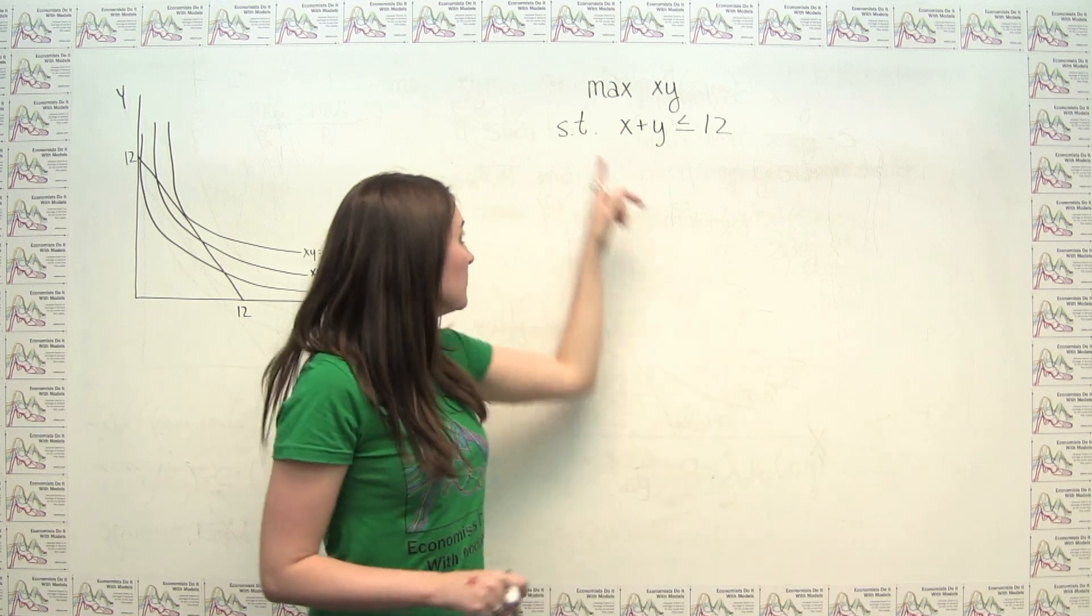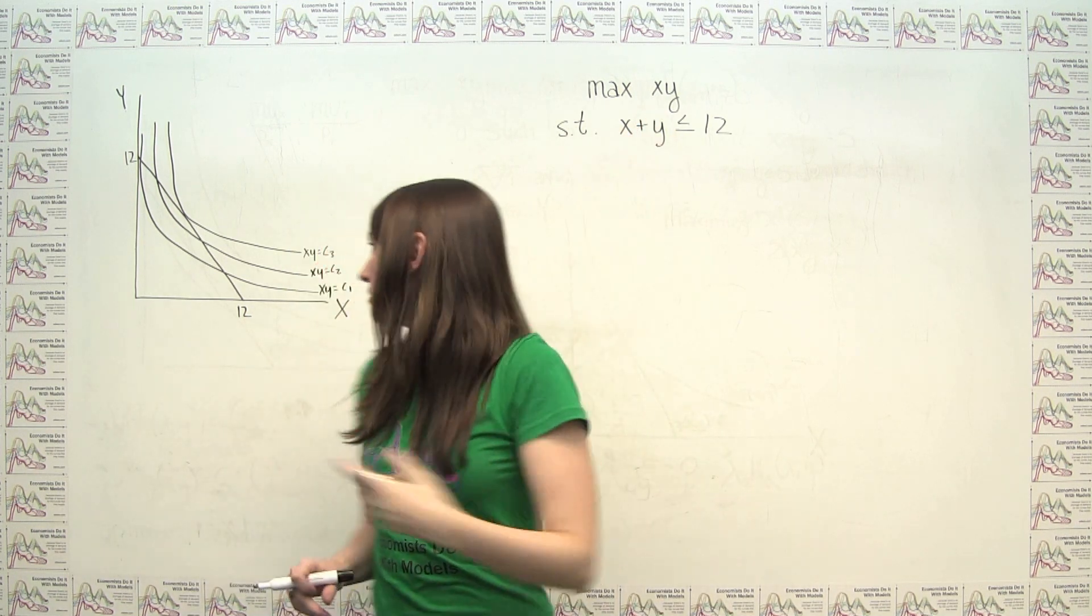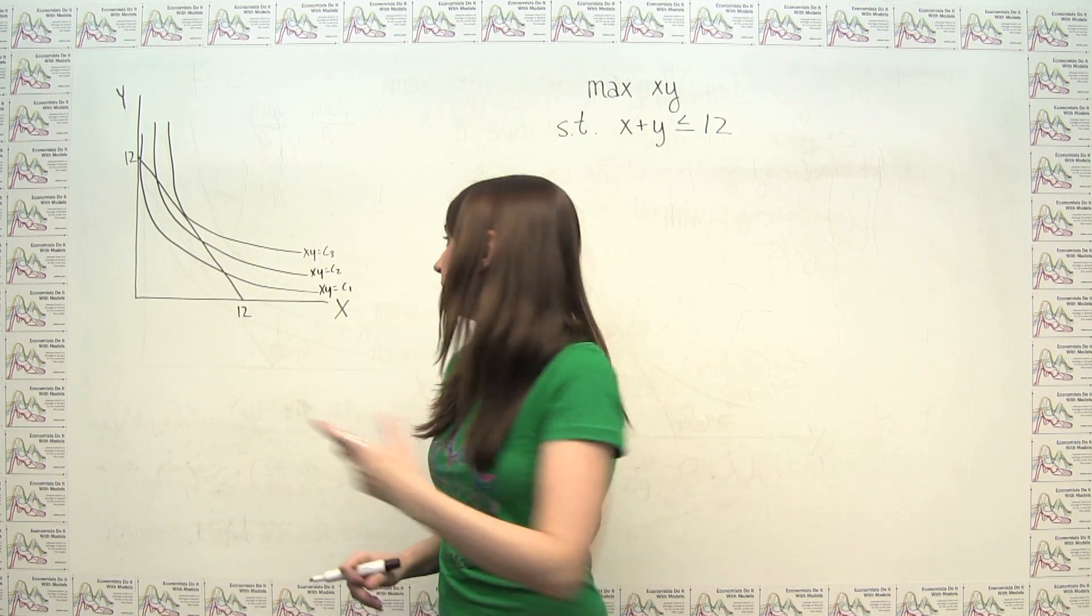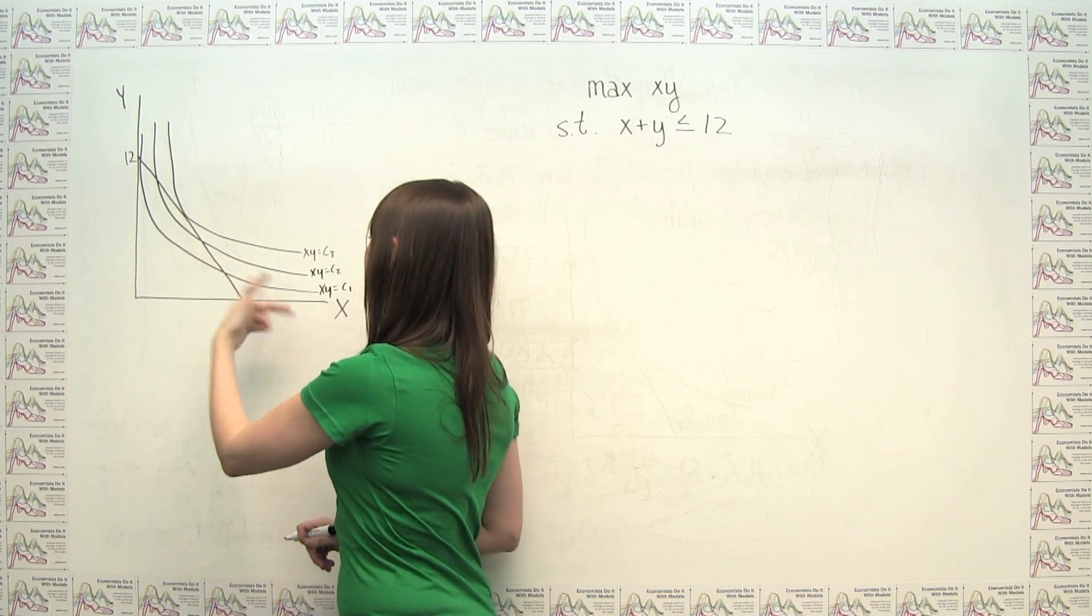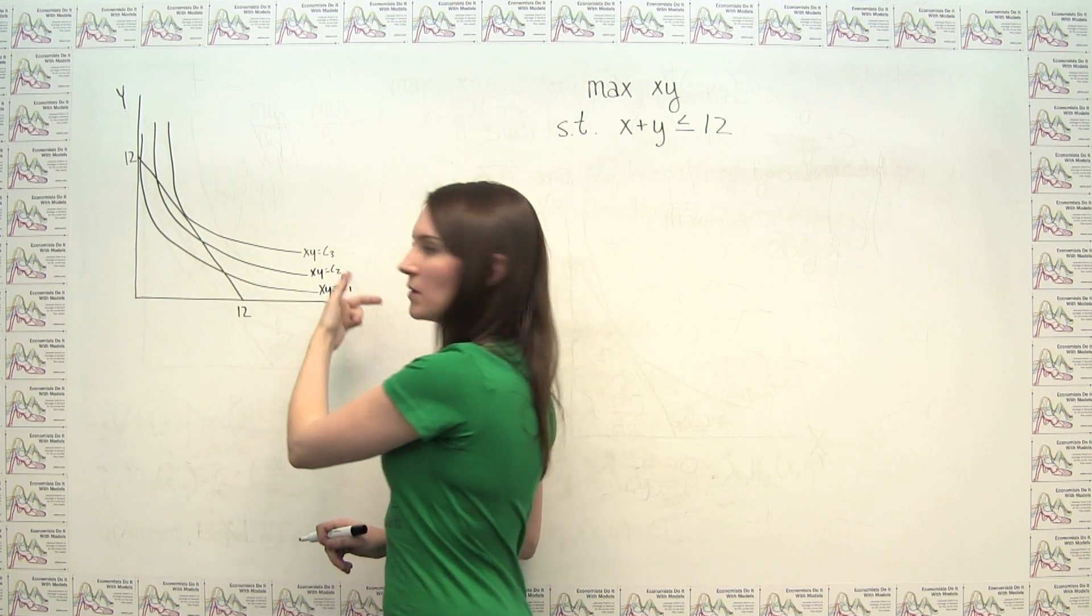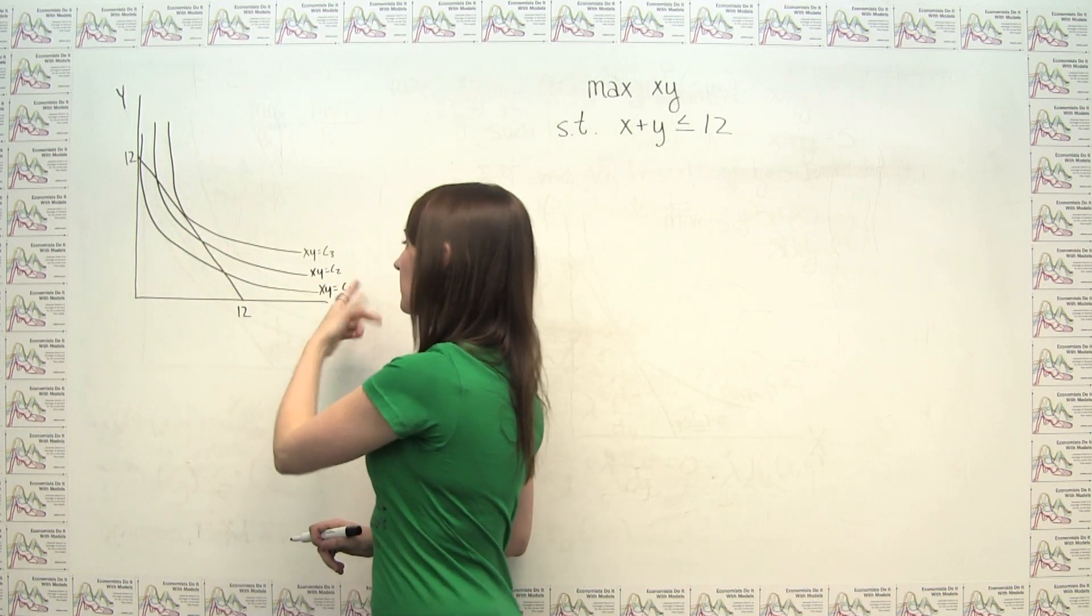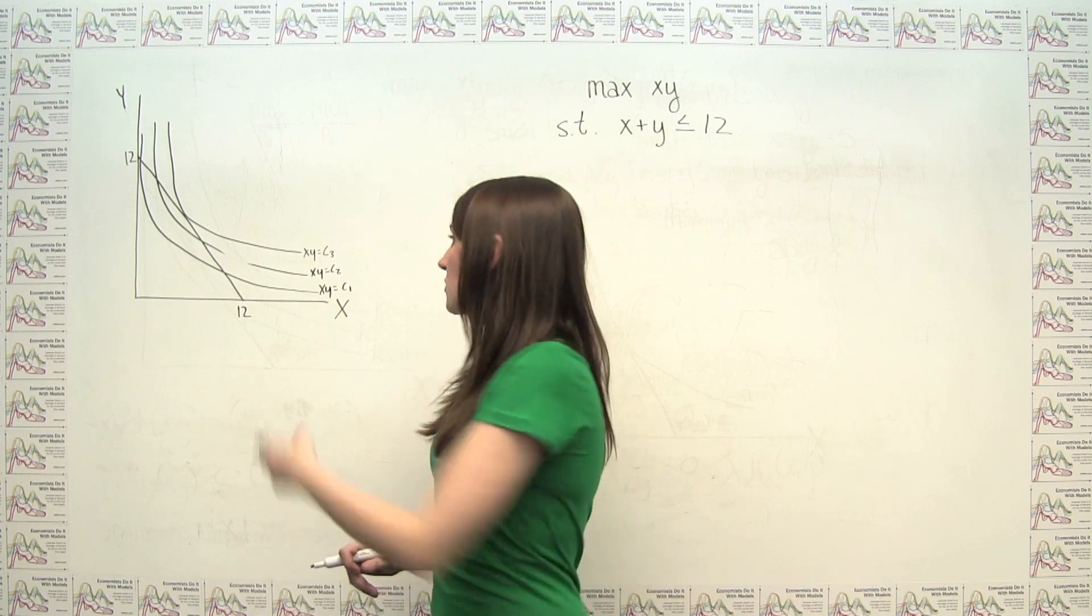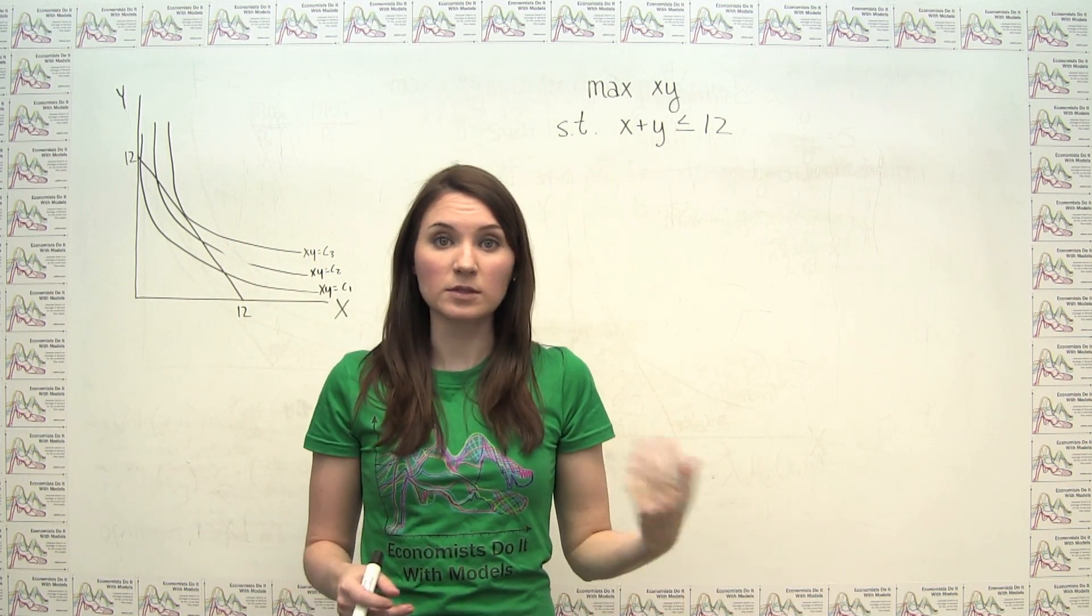Similarly, the level sets of x times y trace out things that look like typical indifference curves that we've seen. xy is equal to some constant c1 is going to have this shape. x times y equals some constant c2 is going to have this shape. If c2 is bigger than c1, it's going to be further out, and so on and so forth. So this is a typical utility maximization type problem that we're looking at.